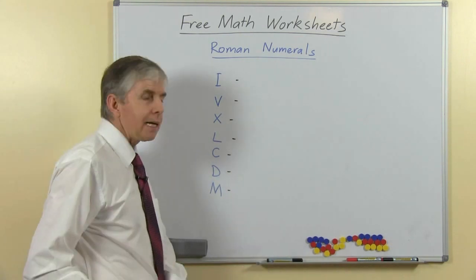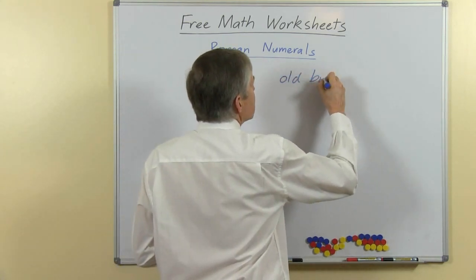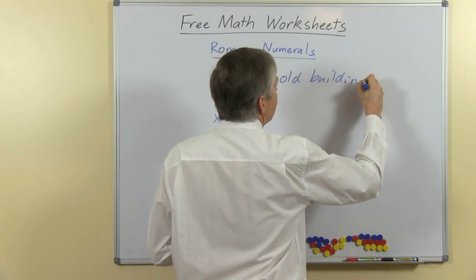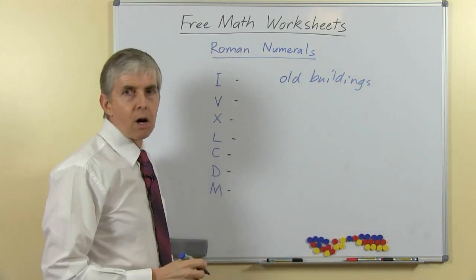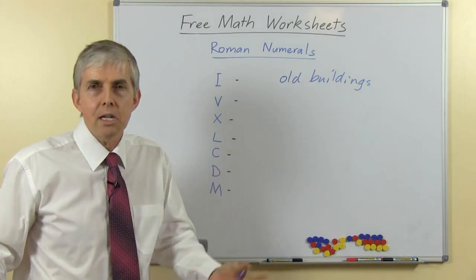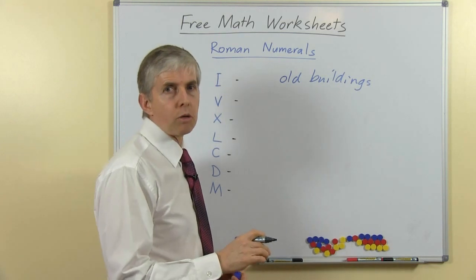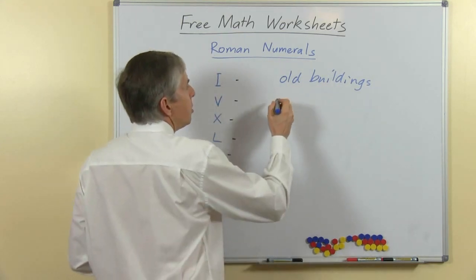But I want to show you some places where you can still see Roman numerals. It depends a little bit on where you live, but there may be old buildings, old government buildings like the city hall, old churches and so on will quite often have Roman numerals on them.